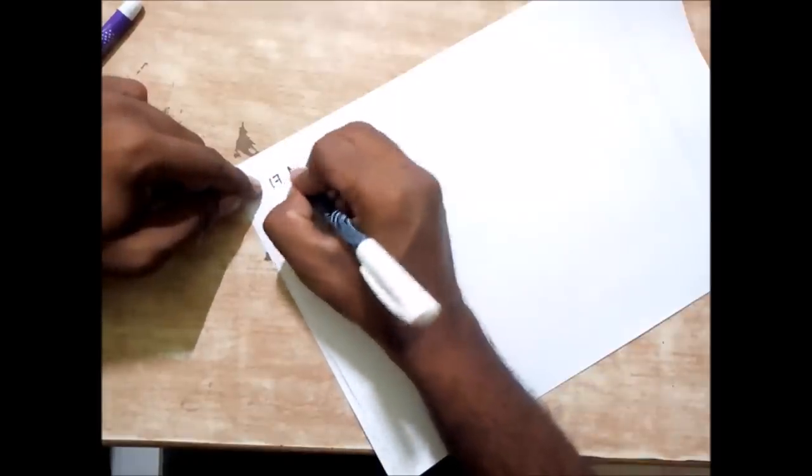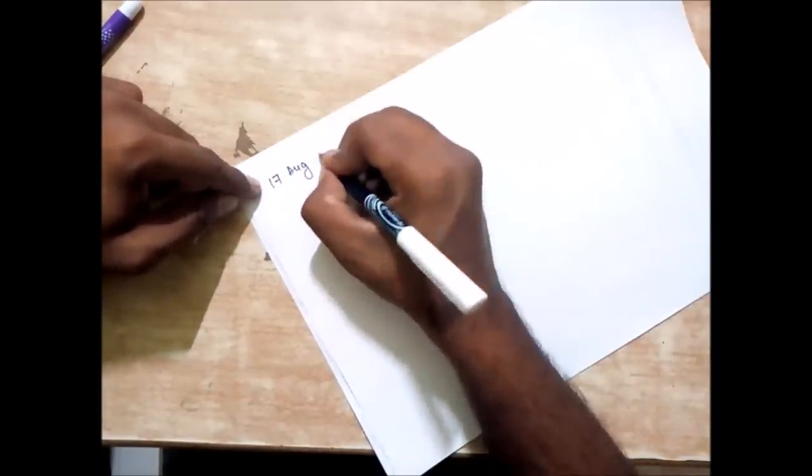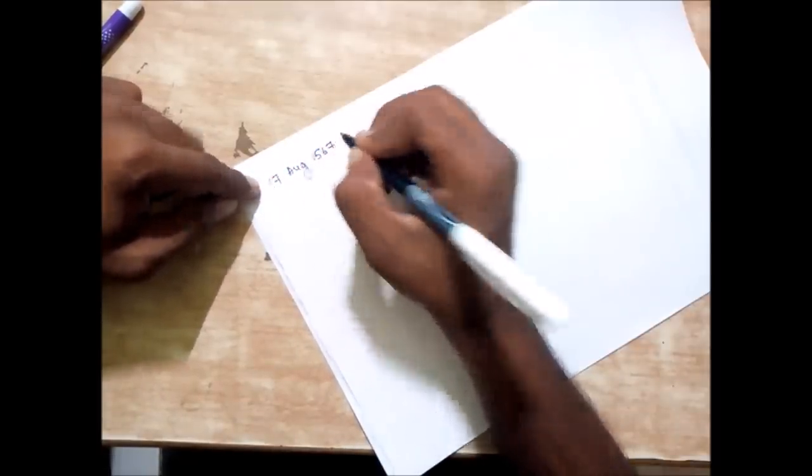Hey guys, welcome to the channel. Let's start solving our problem. Let's suppose we have a date which is 17th August 1567, a random year of different century, random date and month.